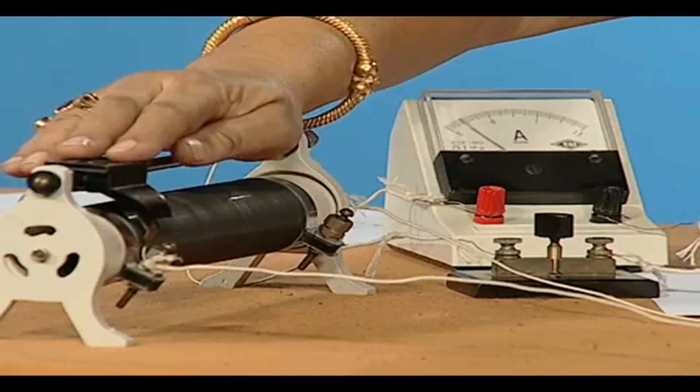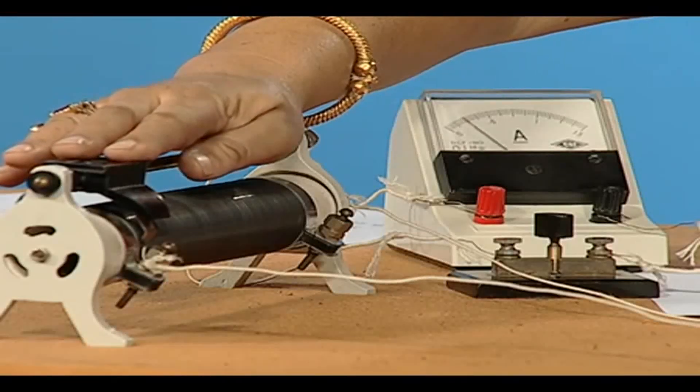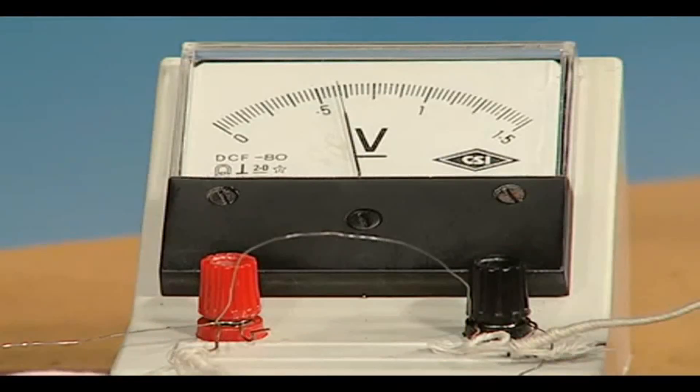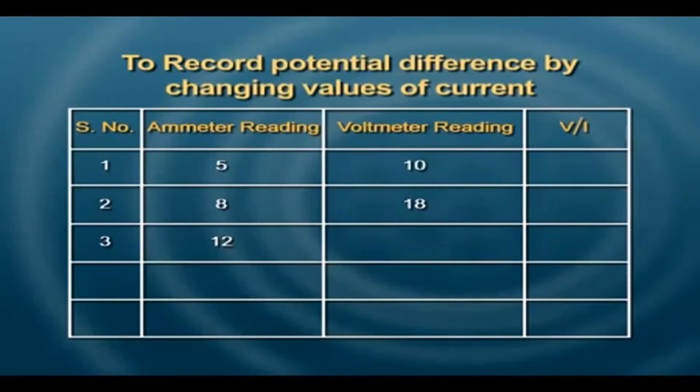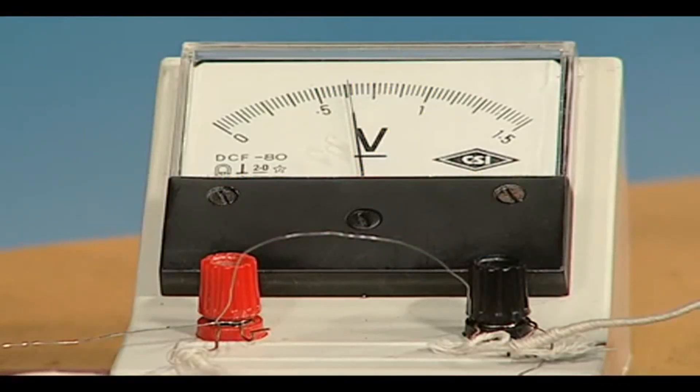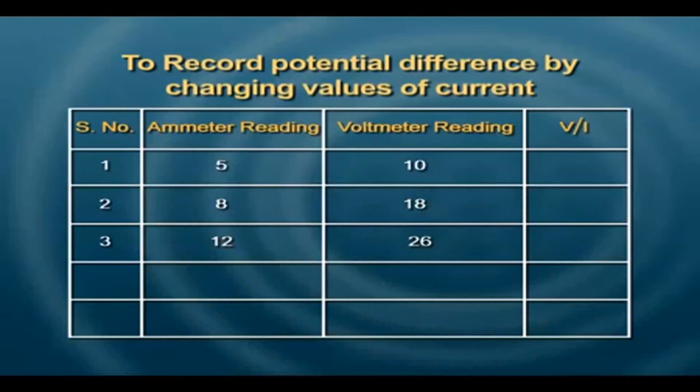I change again. Ammeter reading is 12 divisions and the voltmeter reading as we see here is 26 divisions.